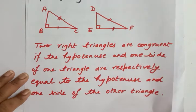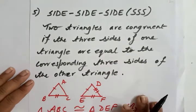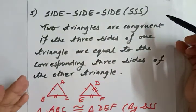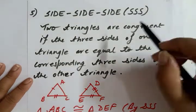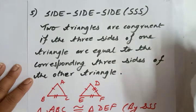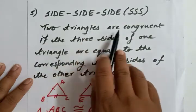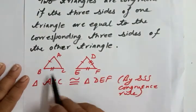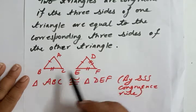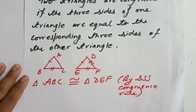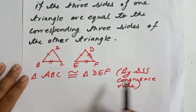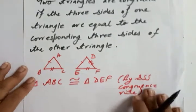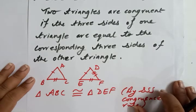The last criteria is SSS: Side-Side-Side. This is quite clear - if all three sides of one triangle are equal to the corresponding three sides of the other triangle, then the SSS rule applies and the triangles are congruent. For example, AB = DE, BC = EF, and AC = DF, so triangle ABC is congruent to triangle DEF by the SSS congruency rule.